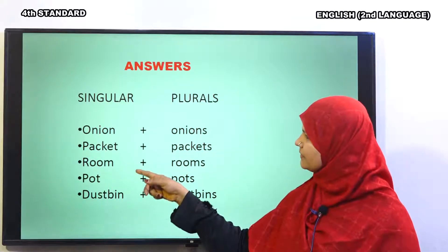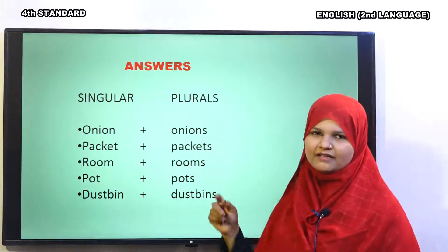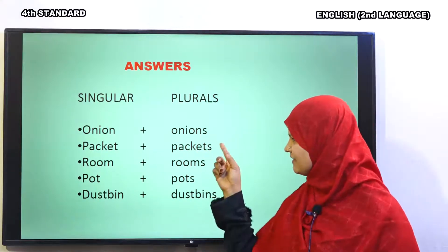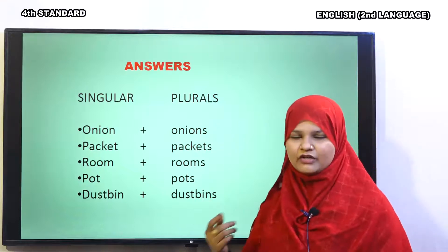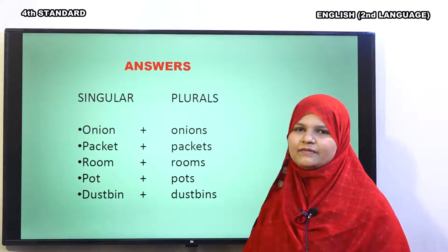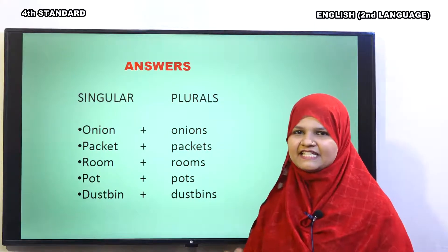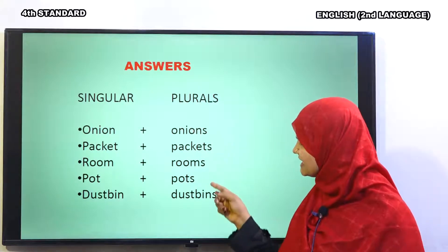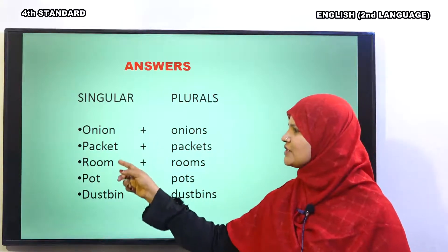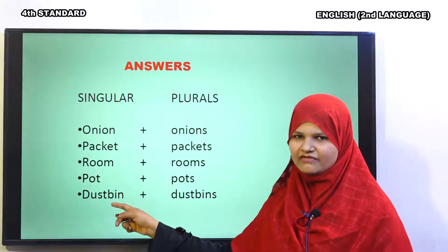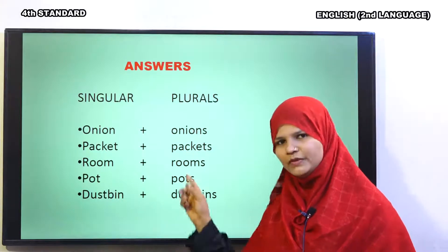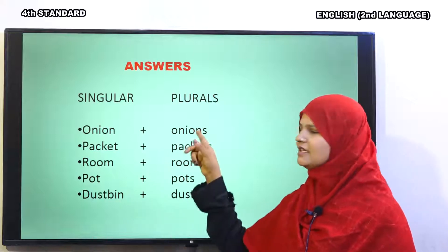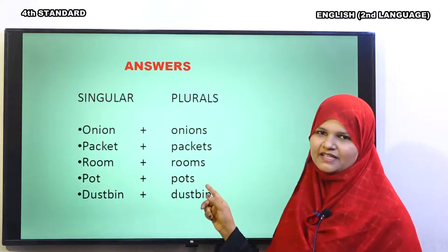So, we make plurals by adding S. This is the first way. There are a lot of methods of making plurals, like adding ES, IES, VES. Here, the easiest method is adding S to these words, which will convert them into plurals. Sirf S lagane se ye singulars jo hain, jamaa ban jaate hain.